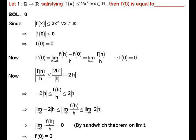For the next question, f is a function from ℝ to ℝ satisfying |f(x)| ≤ 2x² for all real numbers. We have to find the value of f'(0), that is, whether f is differentiable at x = 0.